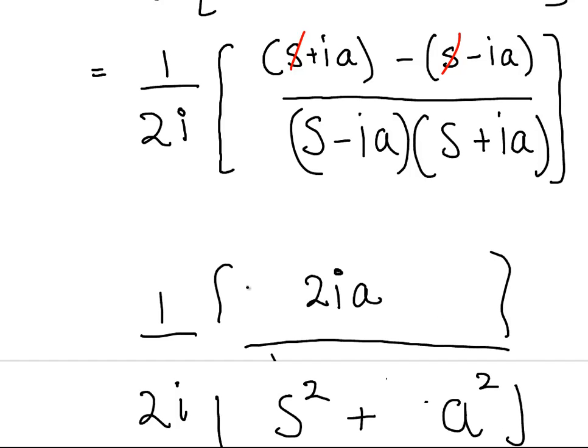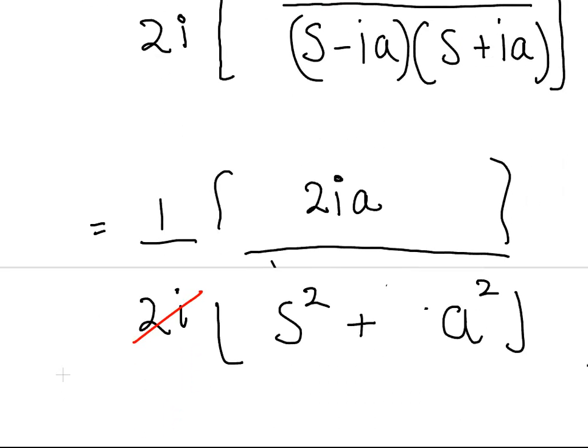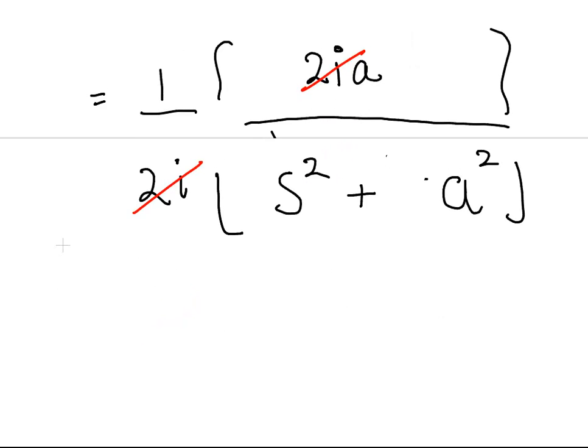So what happens here is that the 2i's cancel out. 2i cancels out with that 2i. Okay, so what we're left with is a over s squared plus a squared. Okay, so that is the second derivation from first principles.